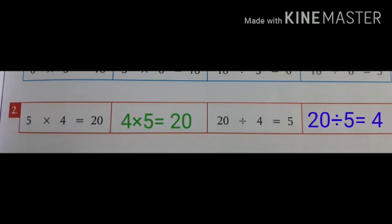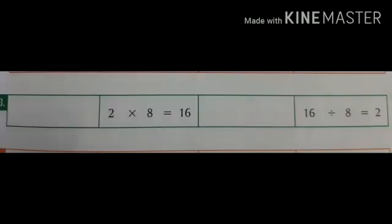Now coming to the third question. The first one is not given. The second multiplication fact is 2 × 8 = 16. What is the first multiplication fact? Yes, 8 × 2 = 16.